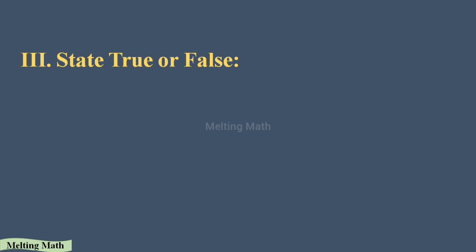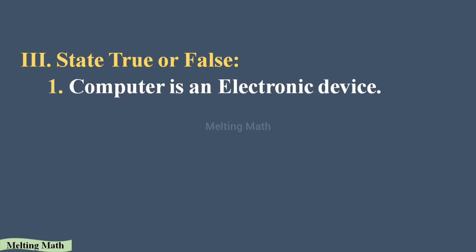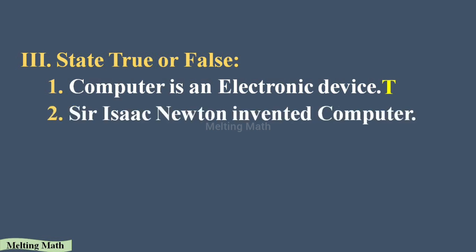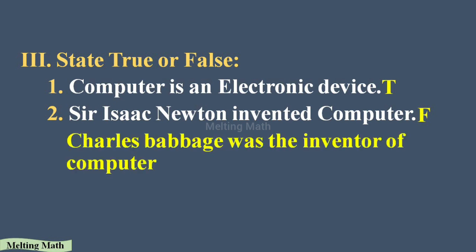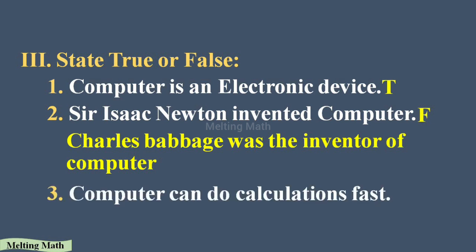Part C: State true or false, and if false, give the correct statement. First: computer is an electronic device — True, because a computer works with the help of electric current. Second: Sir Isaac Newton invented the computer — False, because Charles Babbage invented the computer. Third: a computer can do calculations fast — True, because a computer performs all calculations in a correct and fast manner.